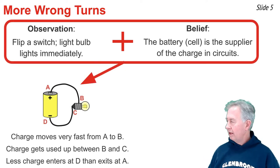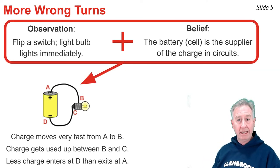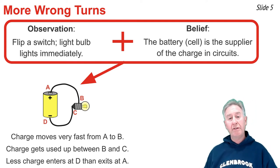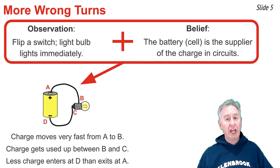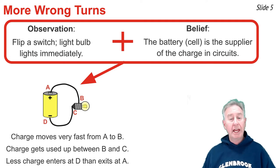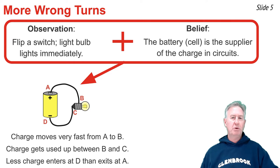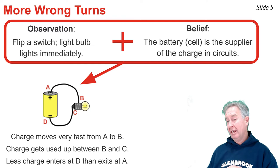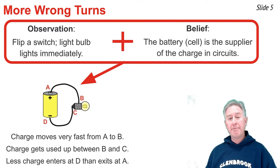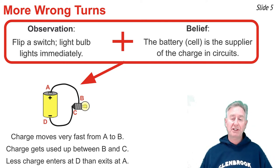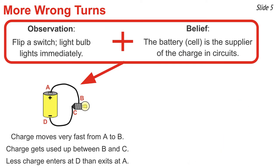The first goes like this. If the light bulb lights immediately and the battery or cell is the source of charge, then charge must be moving very, very fast from location A to location B. And as that charge passes through the light bulb from B to C, a good deal of it must be used up, because after all, that battery will either be ruined or will have to replenish its charge through a recharger. And then finally, the amount of charge that enters that battery at D is less than what exits at A.